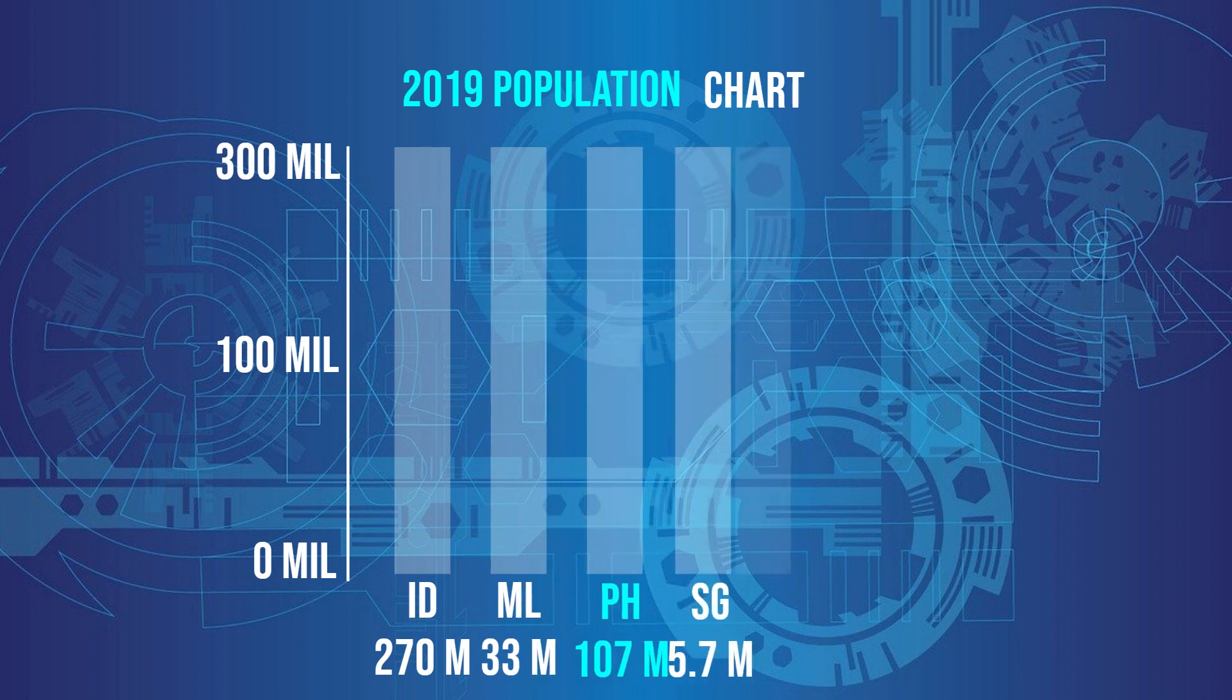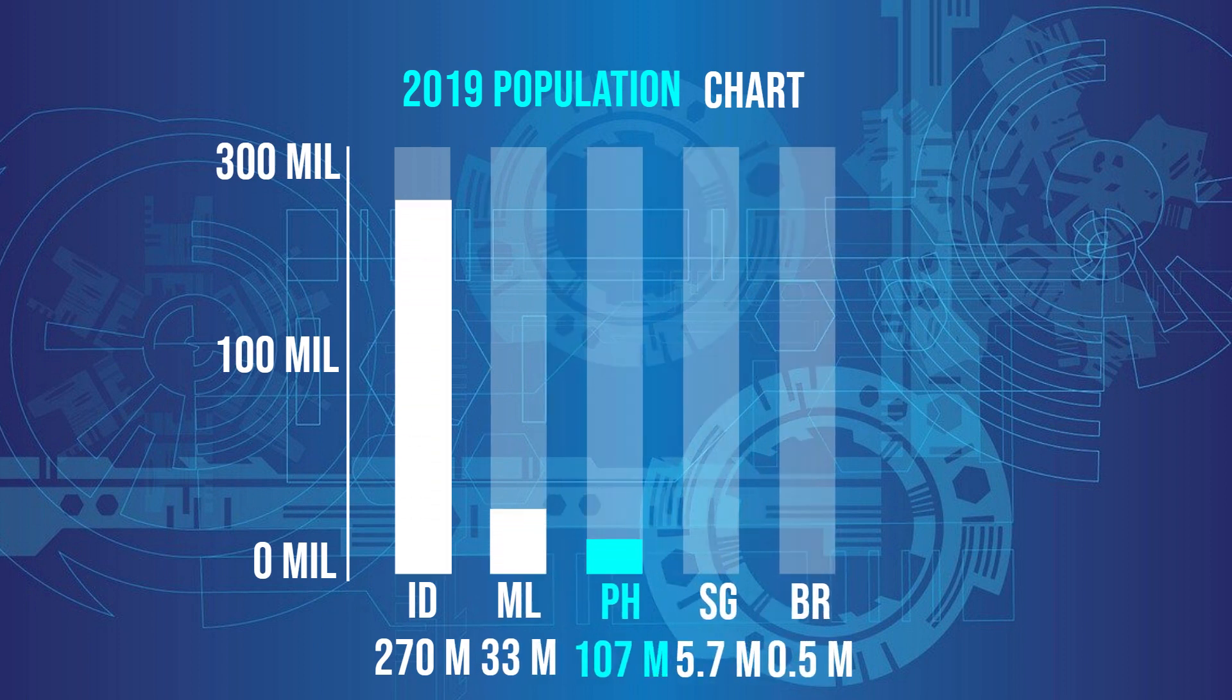By 2019, Indonesia has the highest population among these countries with more than 270 million people. Philippines ranked the second one with more than 107 million. Malaysia is the third one with more than 33 million people. Singapore and Brunei have the least with more than 5.7 million people and 0.5 million people respectively.